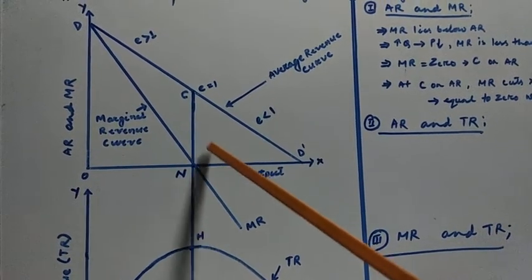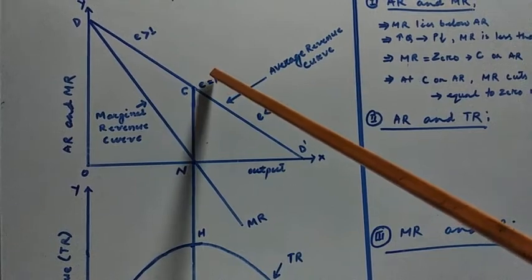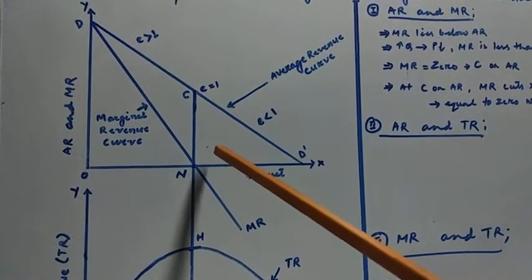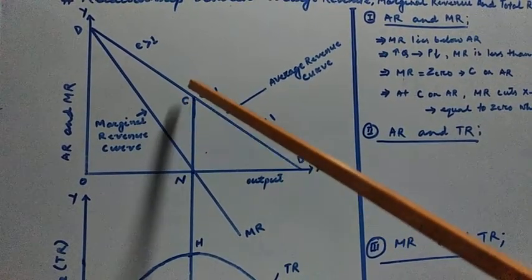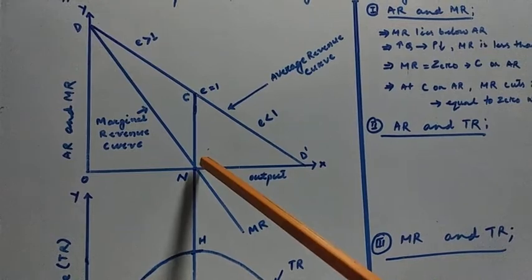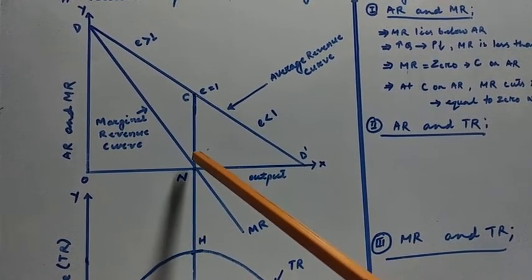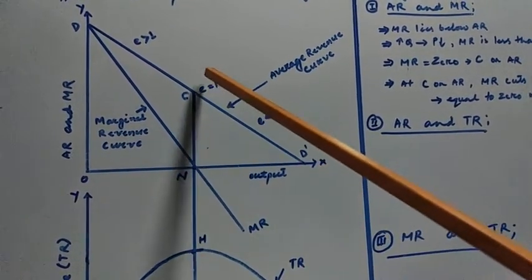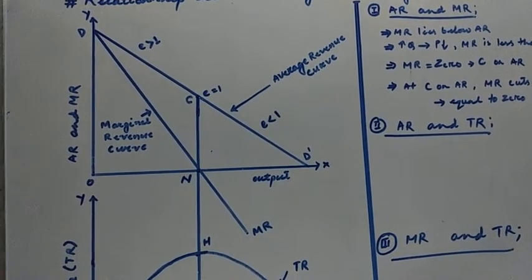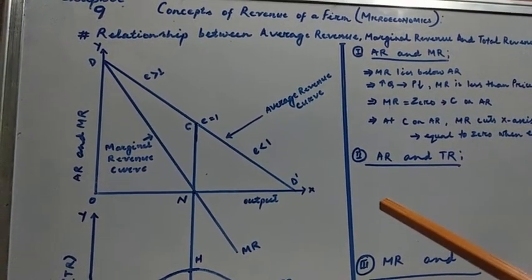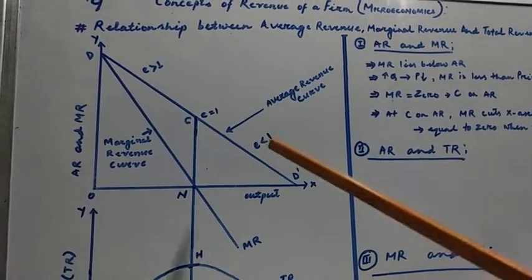Corresponding to the midpoint C on the AR curve, the MR curve cuts the x-axis at point N, indicating that it is equal to zero — since O is the origin — when price elasticity is equal to one. That is the relationship between the average revenue and the marginal revenue.